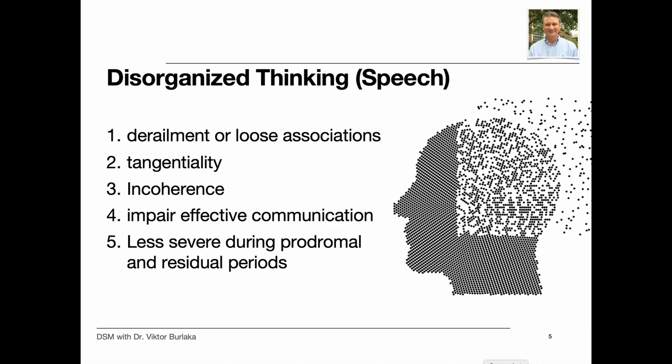Disorganized thinking, or formal thought disorder, is typically inferred from the individual's speech. The individual may switch from one topic to another — this is called derailment or loose associations. Individuals can have tangential speech, when answers to questions are obliquely or completely unrelated. Rarely, speech may be so severely disorganized that it is nearly incomprehensible and resembles receptive aphasia — this is called incoherence or word salad.